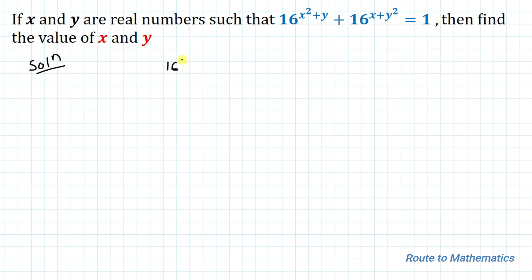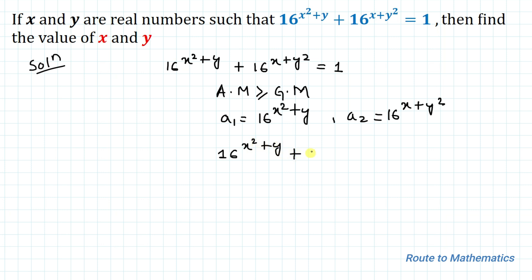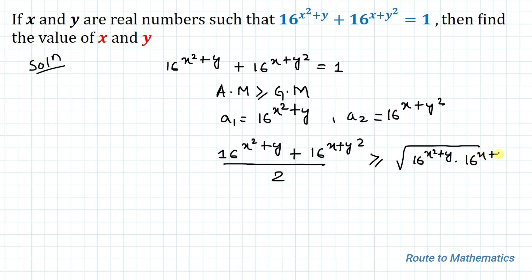Our given equation is 16 to the power x² + y plus 16 to the power x + y² equals 1. In the next step we are going to apply AM-GM inequality, that is arithmetic mean is greater than or equal to geometric mean. Let's take our first term as 16^(x²+y) and second term as 16^(x+y²), and now apply AM-GM inequality.